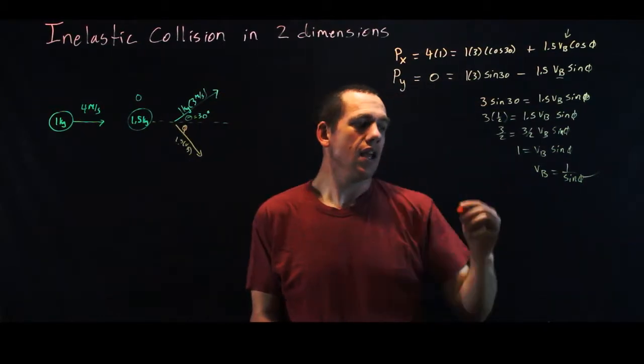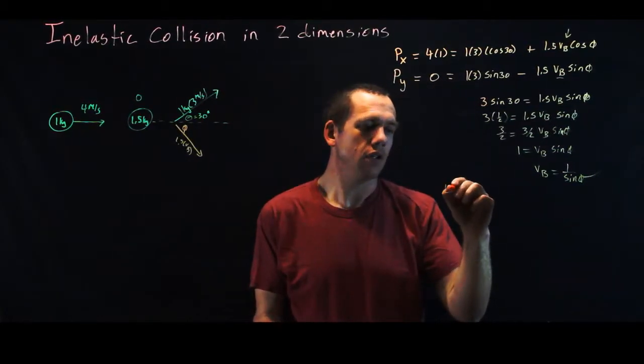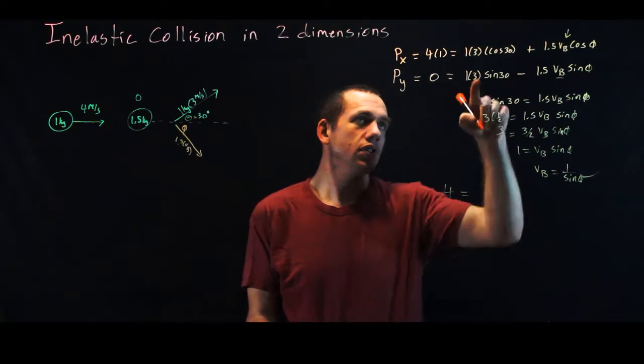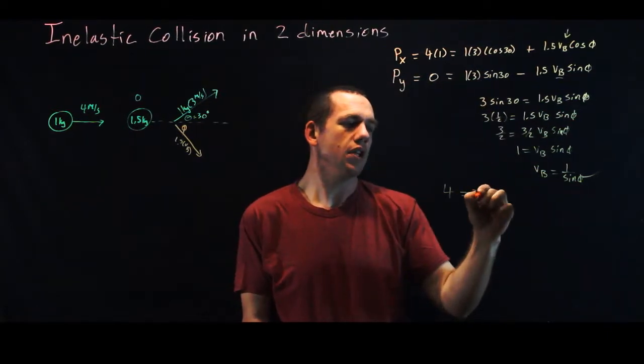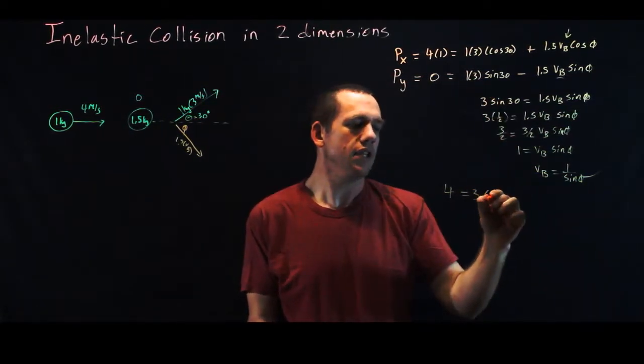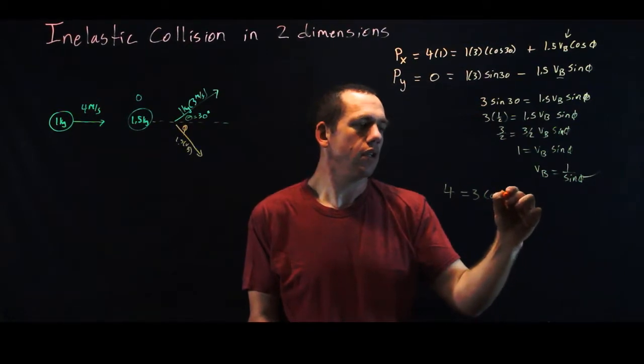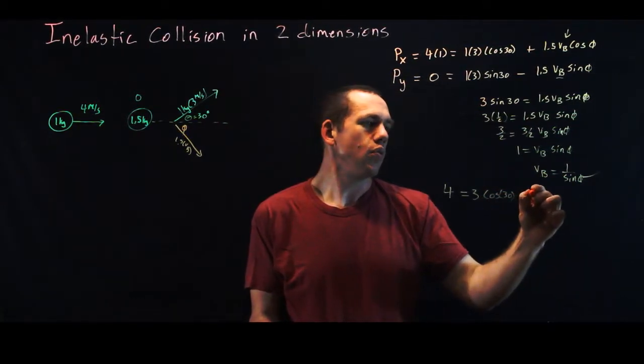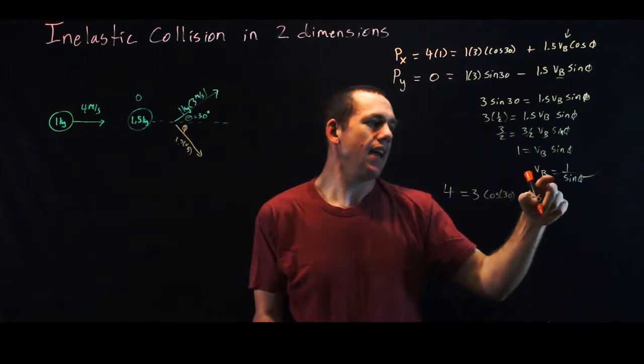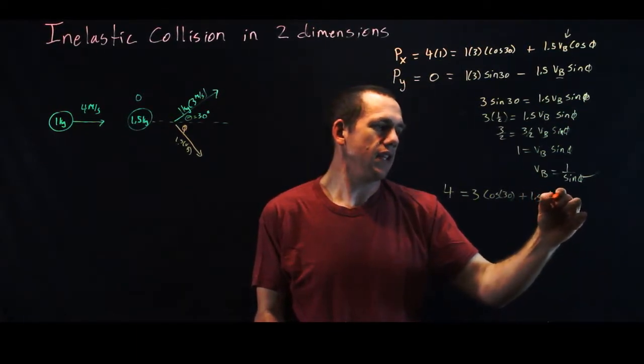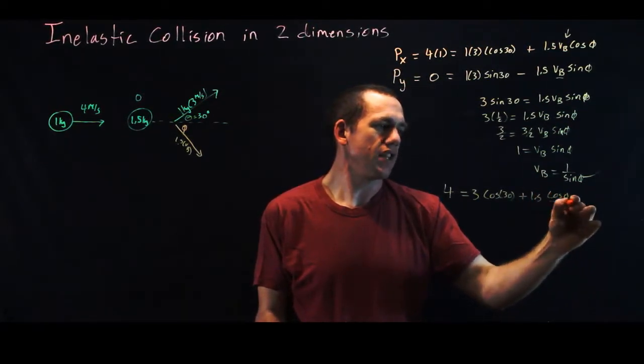And so now when I do that, I get 4 times 1 is 4, 4 equals, 1 times 3 is 3, 3 times the cosine of 30, square root of 3 over 2, plus 1.5, and now I have cosine phi over sine phi.